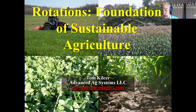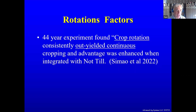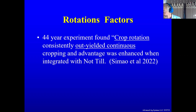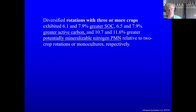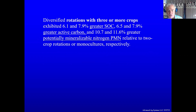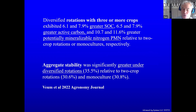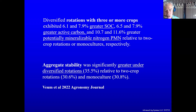At the end I'll take those tools and put them together in a package. In a 44-year experiment, they found crop rotations consistently outyielded continuous cropping, and the advantages were enhanced when they used no-till. That's pretty much what I found over my 40 to 50 years working in agriculture. When we had a diversified rotation, we had greater soil organic carbon, greater active carbon, and greater potentially mineralizable nitrogen. Aggregate stability was significantly greater under diversified rotations relative to a two-crop or monoculture system.